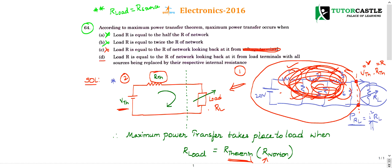Option D states: load resistance equals R of the network — correct — looking back from the load terminals — correct — with all sources being replaced by their respective internal resistances — this is exactly what we explained. Everything matches, so Option D is the right choice. RTH is found by replacing all sources with internal resistances and looking from the load terminals.